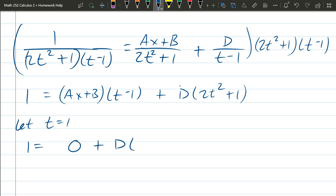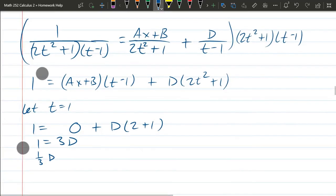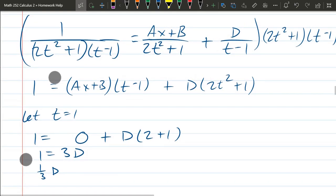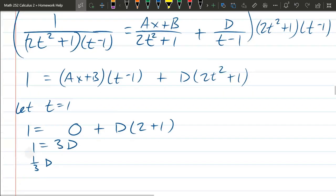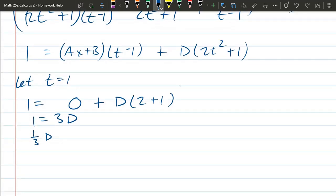ax plus b times 0 is 0, plus d times, now t is 1, so we have 2 times 1² plus 1, so 1 equals 3d, d equals 1 third.